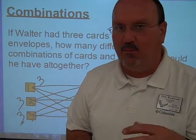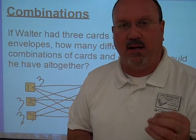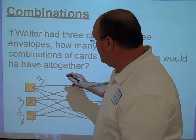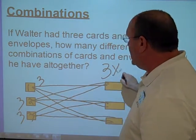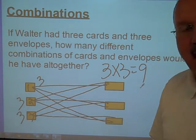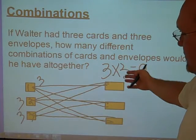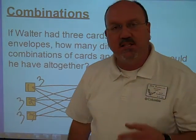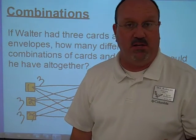The shortcut to that, which is fine to teach the kids at this point about combinations, is how many items are in group one? Three. How many items in group two? Three. And it's just as simple as that. Three times three is nine. That's combinations part of probability and statistics.